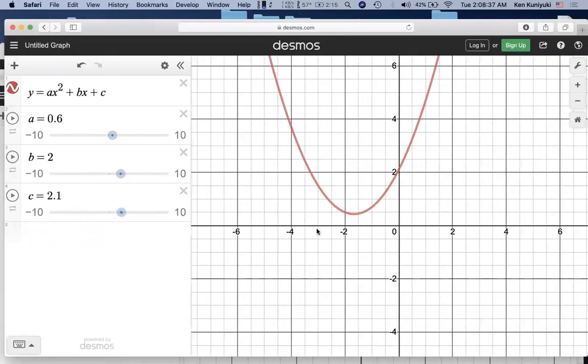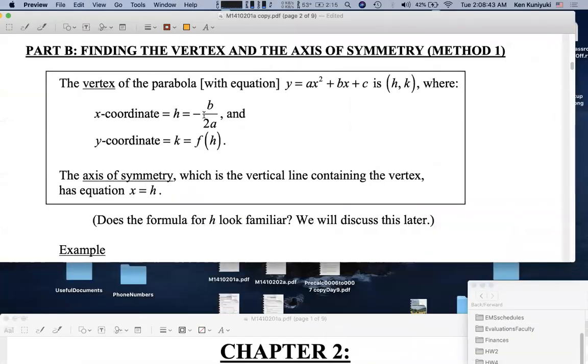All right, now again, what's the most important point on the parabola? The turning point, the vertex. Where is it? So what's the recipe for finding the vertex of a parabola and the axis of symmetry? We'll look at an alternate method later on.